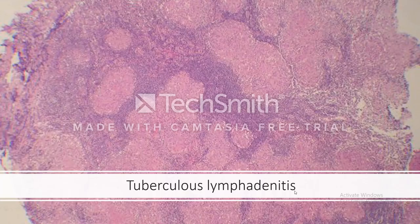This is tuberculous lymphadenitis. The tubercles, or granulomas, form also in the lymph node, and they fuse together to form larger and larger granulomas — we call this tuberculous lymphadenitis.